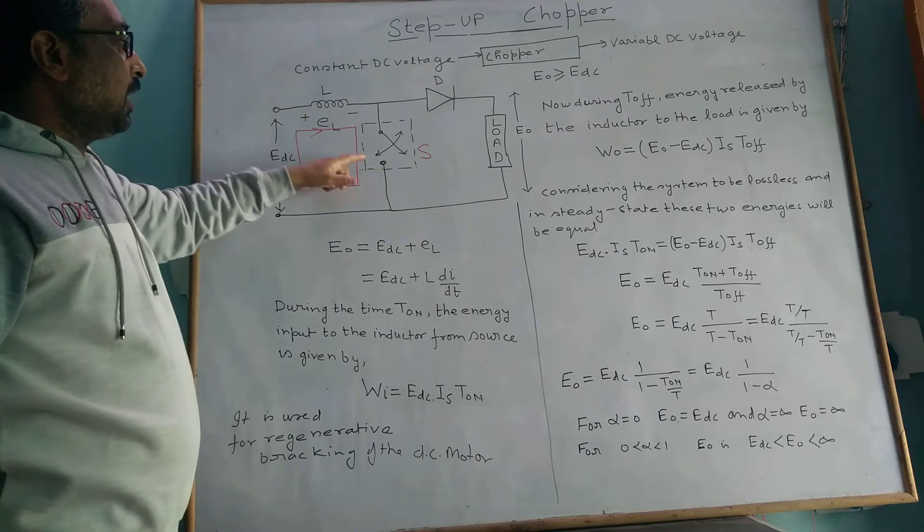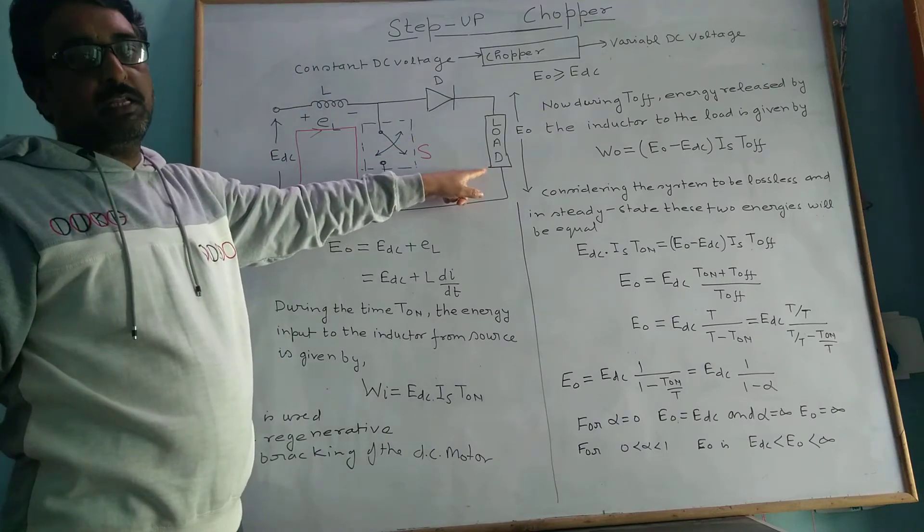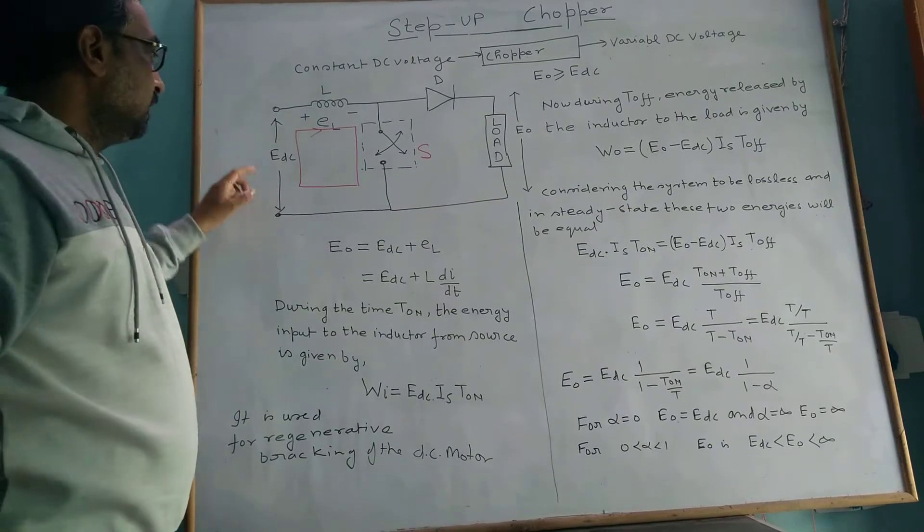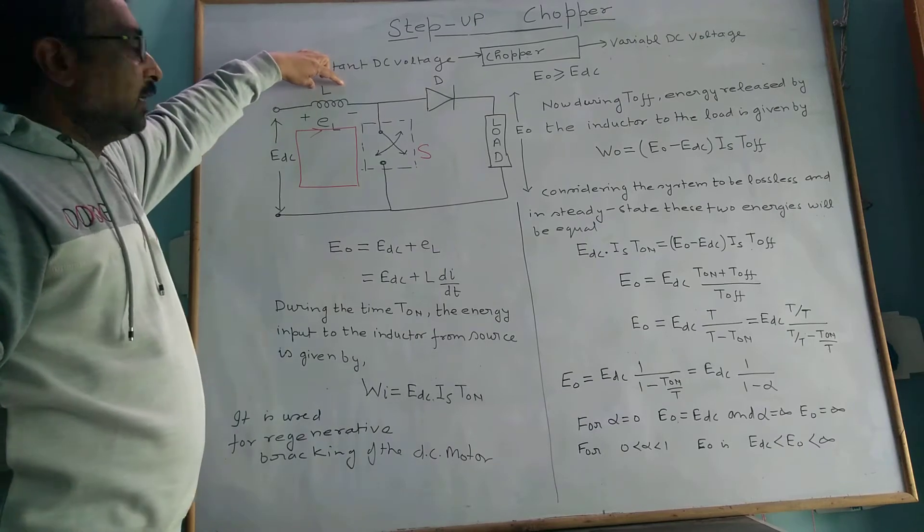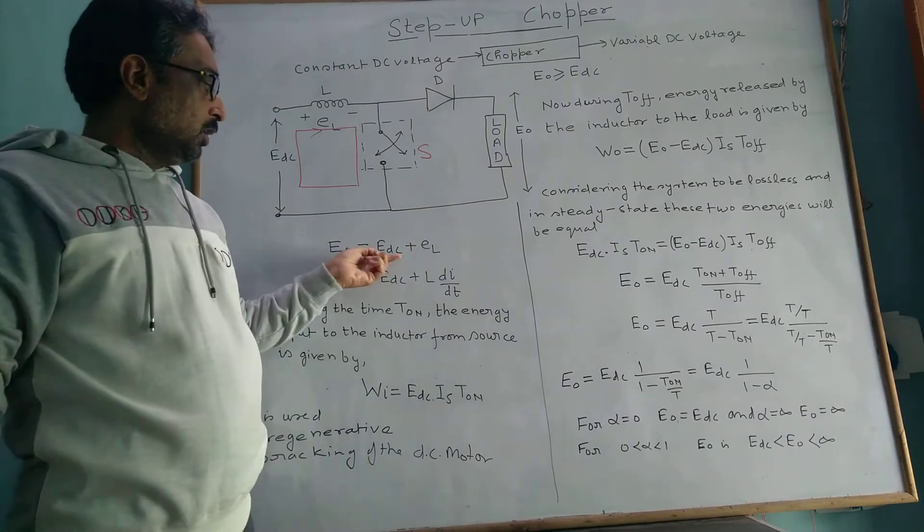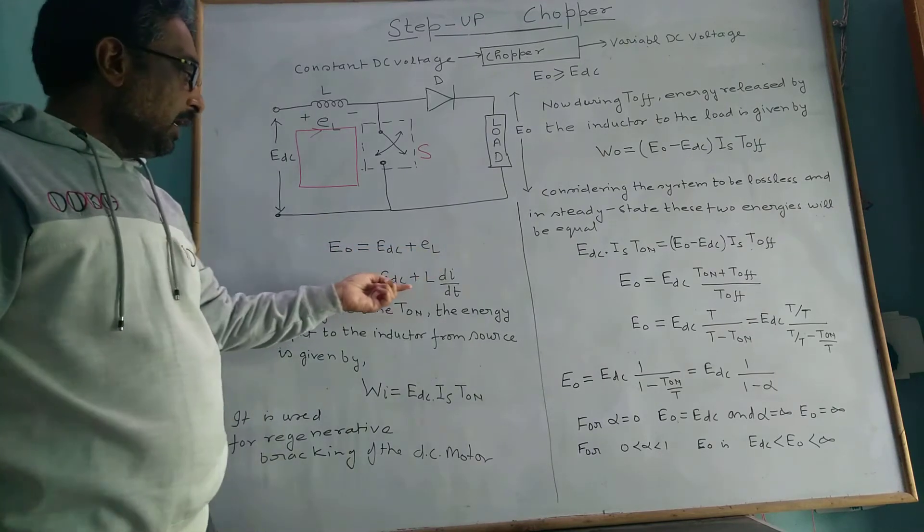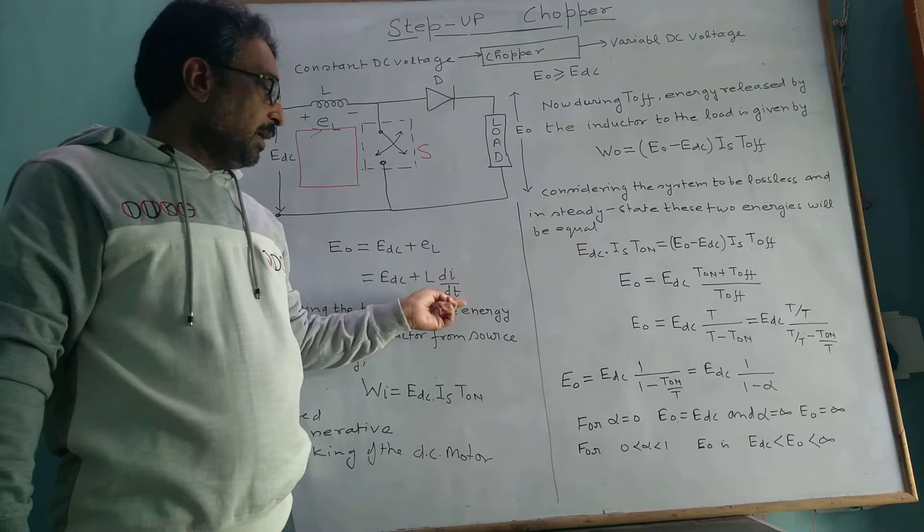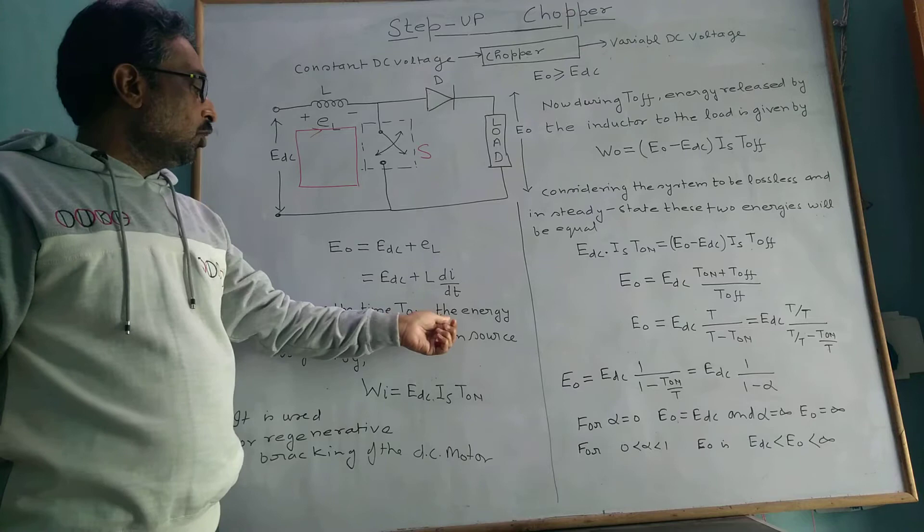Inductor charges when switch is off. Load is supplied by two sources: one is DC source E_DC, and the inductor with E_L equals L dI/dt during the time T_on.